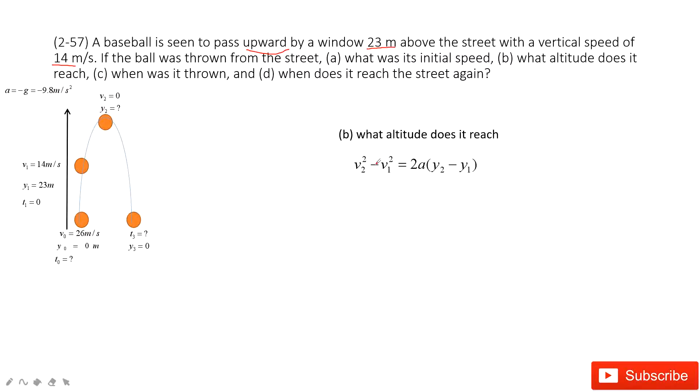We still use this function about velocity with displacement. And input the known quantities. Right? And then we can solve it. The y2 is y1 plus v1 squared divided by 2g. And then we input the known quantities. 33 meters.